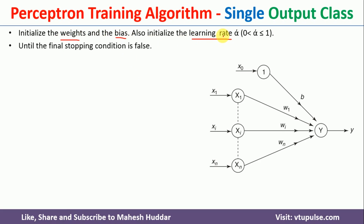After this, we need to perform the remaining steps until the stopping condition is satisfied. We will be given some target, and we calculate the output in each iteration. If the output is equivalent to the target, the stopping condition is satisfied. If not, we need to perform the remaining steps again.